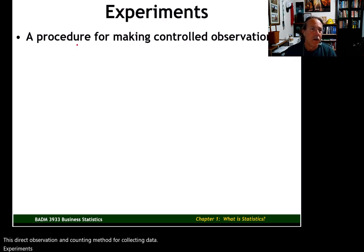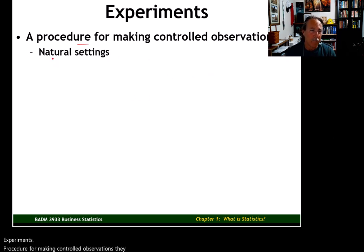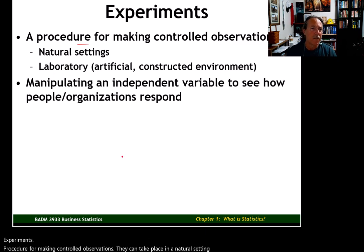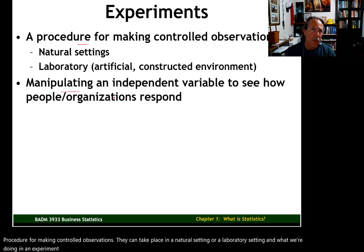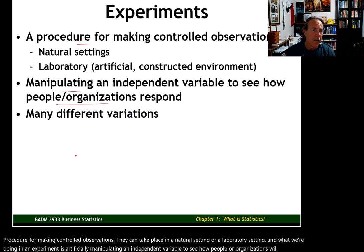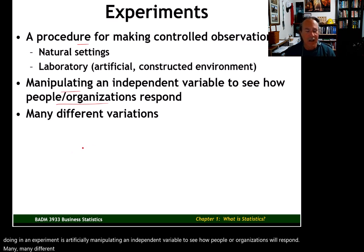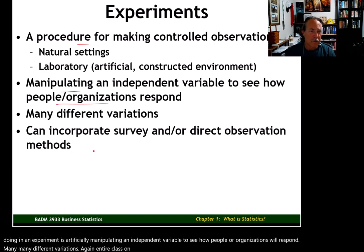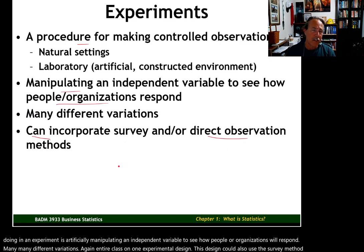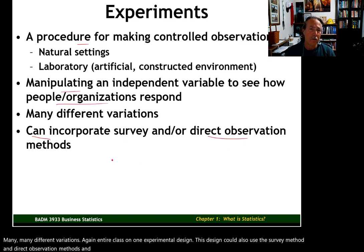Experiments are a procedure for making controlled observations. They can take place in a natural setting or a laboratory setting. In an experiment, we artificially manipulate an independent variable to see how people or organizations will respond. There are many different variations, and an entire class could be devoted to experimental design. This design could also use the survey method and direct observation methods in the measurement strategy.